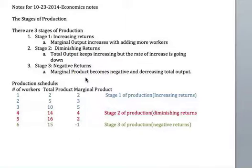This is shown in the production schedule. In the production schedule you have a set number of workers, a column for total product, and a column for marginal product. Total product is just the total output a company will produce in a given day or week, and marginal product is the change you get when you add an additional worker.